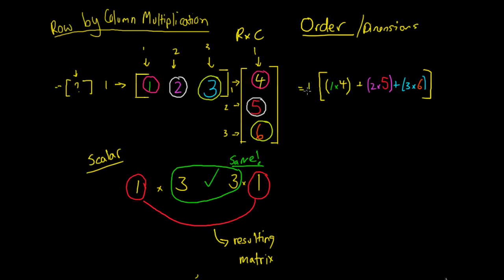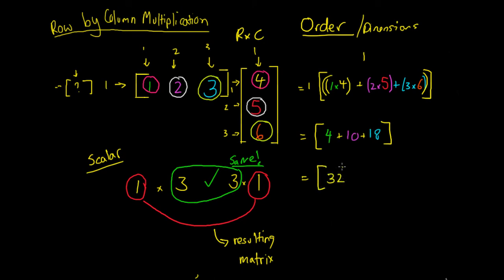As you can see, it's only one row, and after we add all these numbers together it will be just one column — one number — a 1 by 1, just like we predicted. Simplifying: 1 times 4 equals 4, plus 2 times 5 which is 10, plus 3 times 6 which is 18. So our resulting matrix is 4 plus 10 plus 18. Ten plus 18 is 28, plus 4 is 32. Our resulting 1 by 1 matrix equals 32.